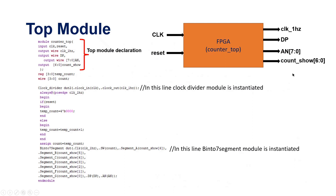This is my top module coding. Here you can see I have instantiated two modules. One is a clock divider to divide the 100 MHz on-board clock to 1 Hz output, and another is BIN2-7-segment DUT. This is for the 7-segment decoder. My top module declaration requires clock and reset. This is my 1 Hz output clock — I have converted the 100 MHz clock to 1 Hz. The DP pin is a package pin for driving the 7-segment display, and AN is a package pin for enabling the 7-segment. Count show is the decoder output which will be transferred to the 7-segment display.